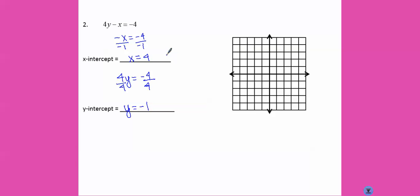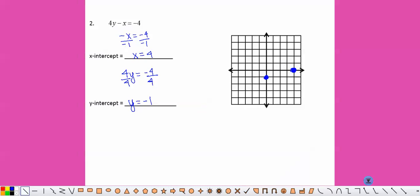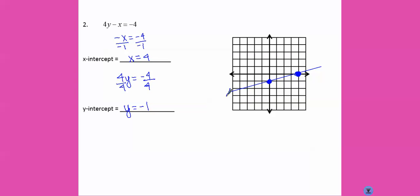Let's graph our points. Where x equals 4, make a dot. Where y equals negative 1, make a dot. Take our ruler to connect the dots. There we go. Arrow. Arrow.